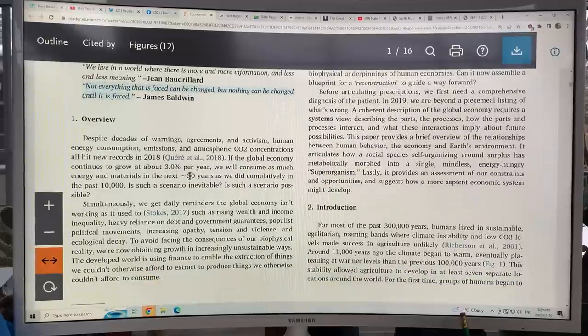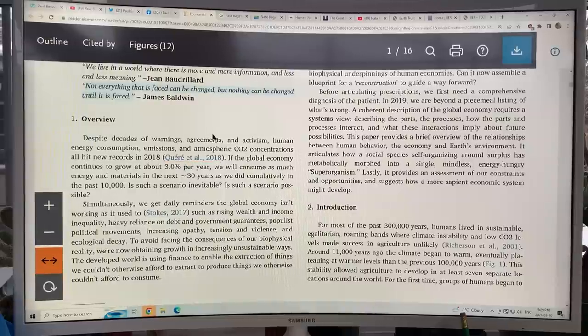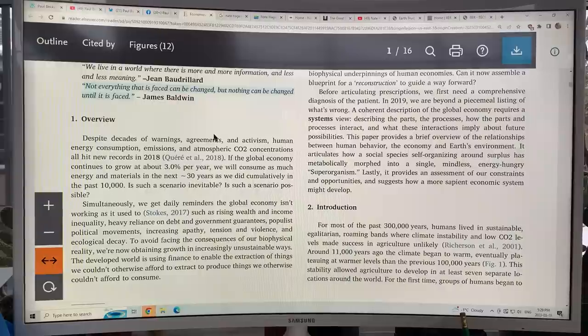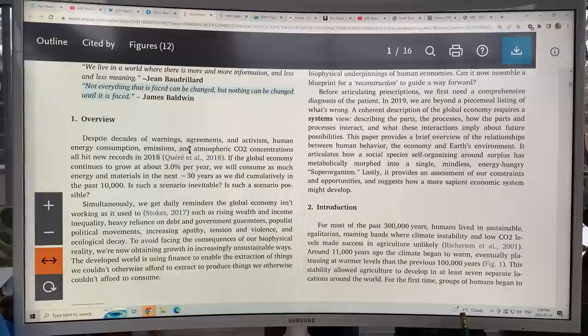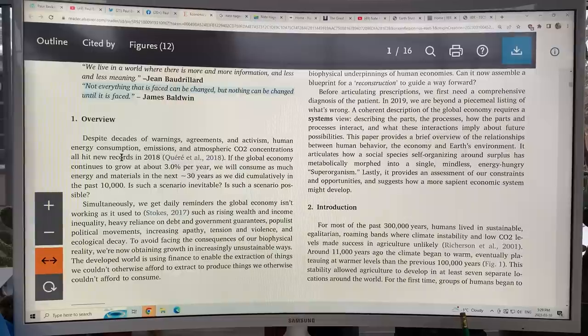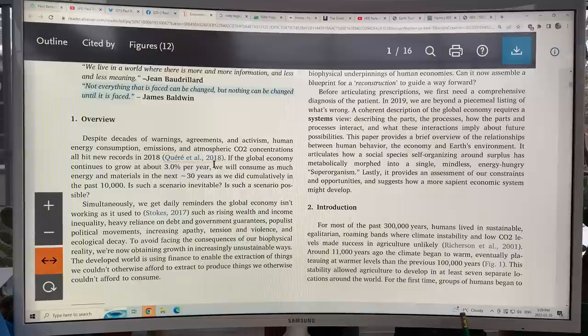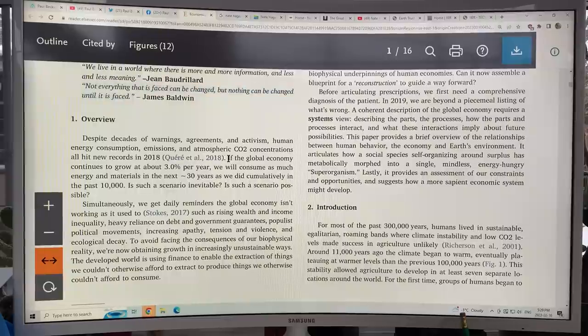So just an overview, we've had decades of warnings, agreements and activism, lots of COPs. We just had COP 27, the 27th Conference of Parties, goes back a long period of time. Human energy consumption, emissions and atmospheric CO2 concentrations, they're all hitting new records. Now, this paper was published in 2019, but this is continued to present. There's a little back off the first year of the pandemic, but it's pretty much back up to where it was.